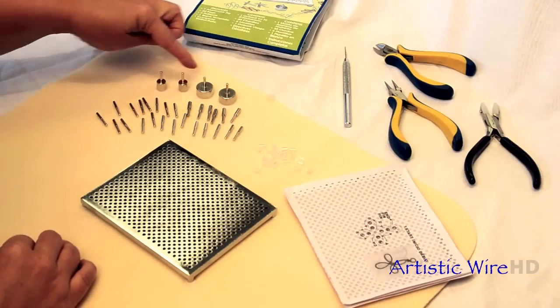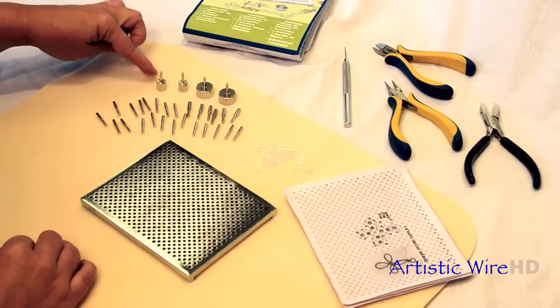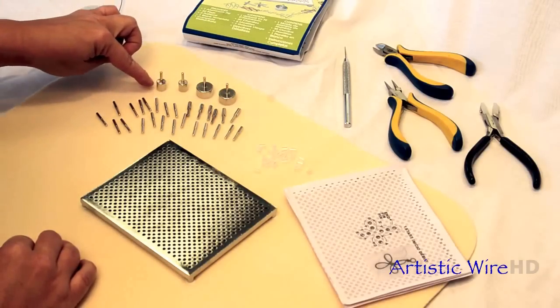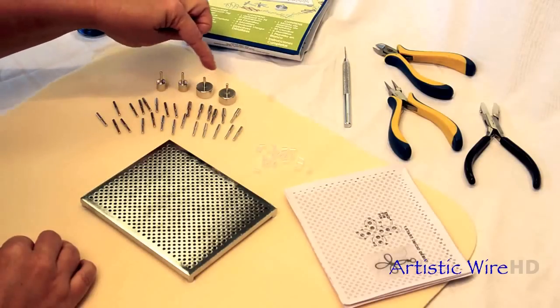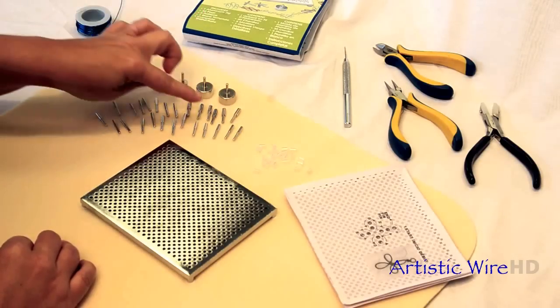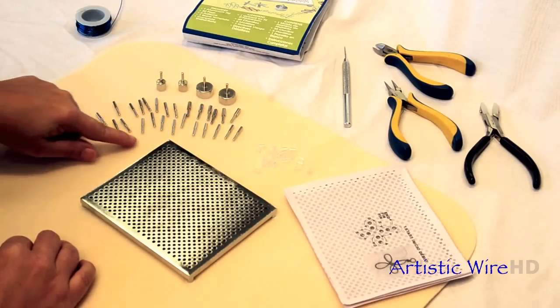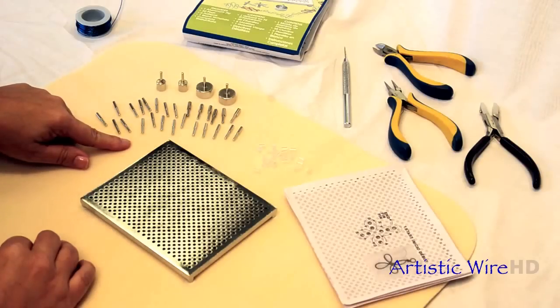What's really fun is that these pegs—these larger round ones—will allow you to make really nice hoops for your earrings, really cool circles. And then of course you have the smaller pegs down here that you're going to use to make your shapes.